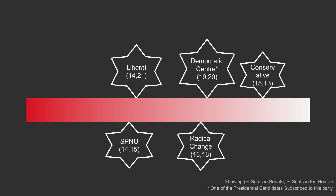Next is another left-wing party, the Green Alliance. Overall, after the previous election, the right-wing parties hold the upper hand in the legislatures.